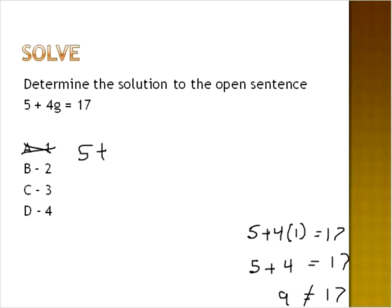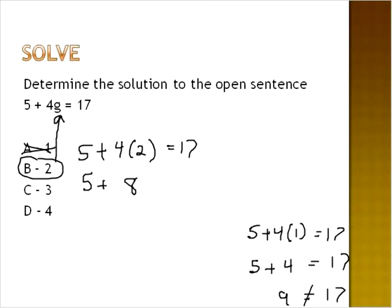Five plus four times two is equal to seventeen. Five plus four times two is eight, and five plus eight is thirteen. Thirteen is definitely not seventeen, so B is not the correct answer.